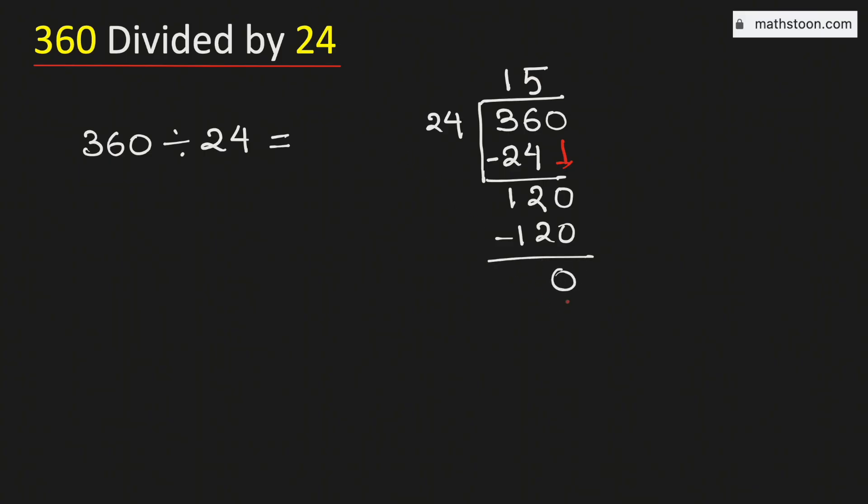As we have got the remainder 0 so we will stop. Therefore the value of 360 divided by 24 is equal to 15 and this is our final answer.